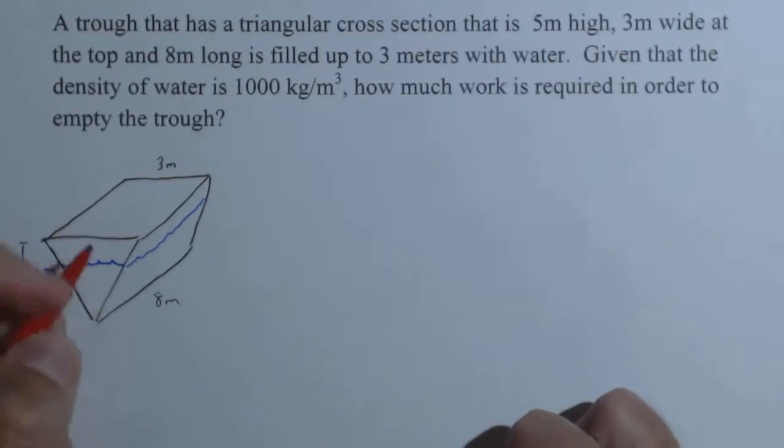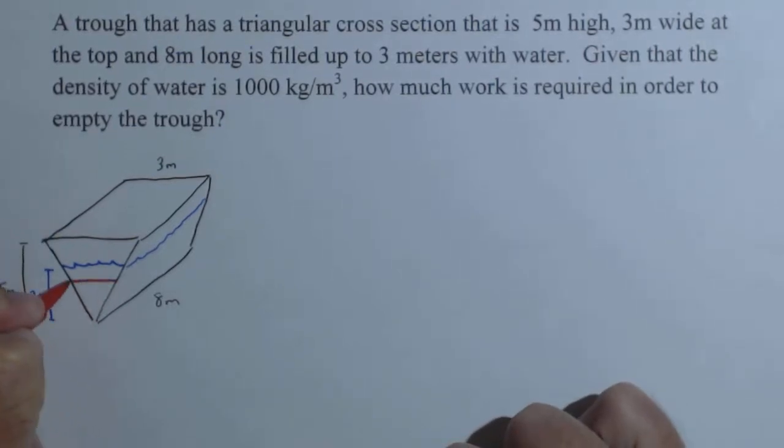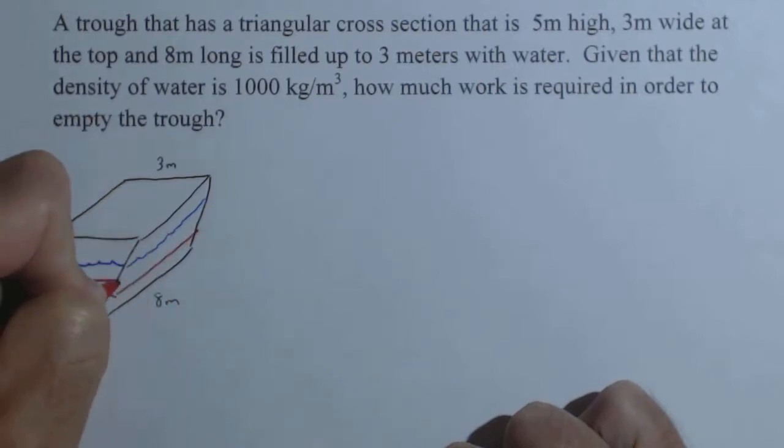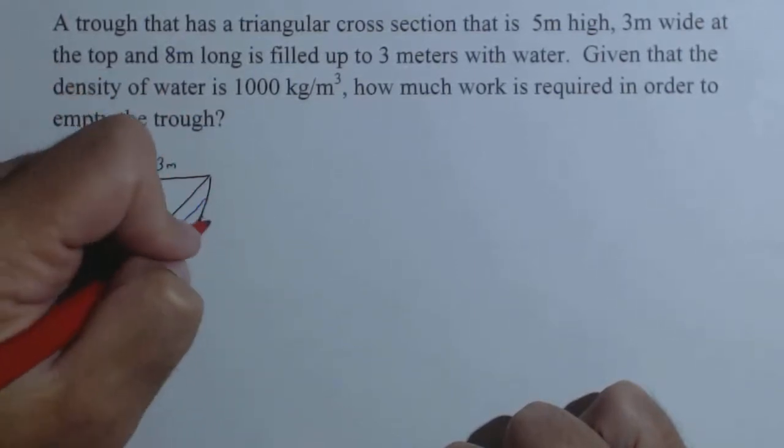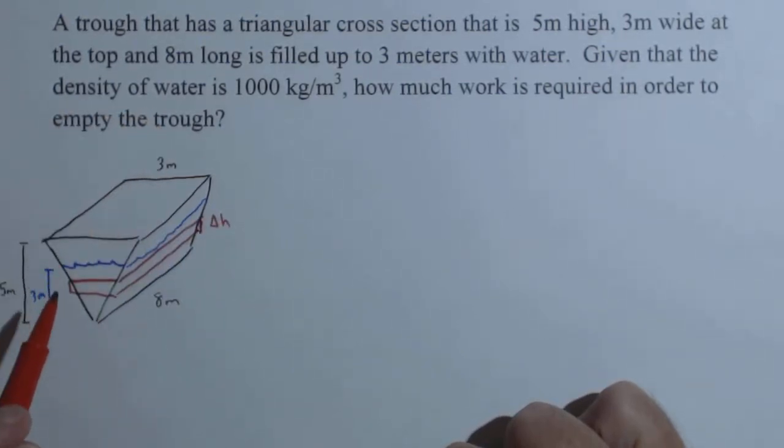We're going to do this the way we approached all the other ones, and that's by looking at a slice. Our slice is going to look something like this, and let's give it a thickness, delta H. We're going to be labeling variables as we go, and we'll label them in red so you can see how they stick out.